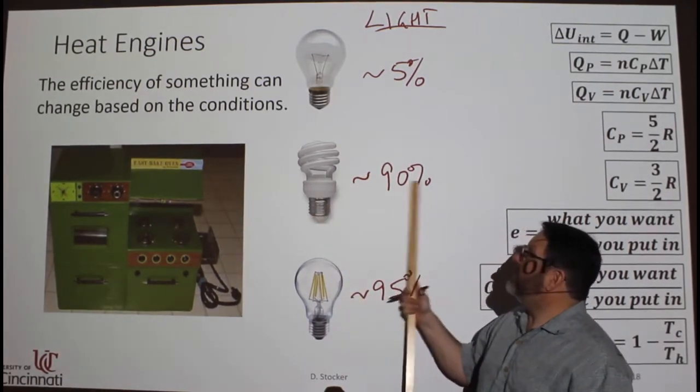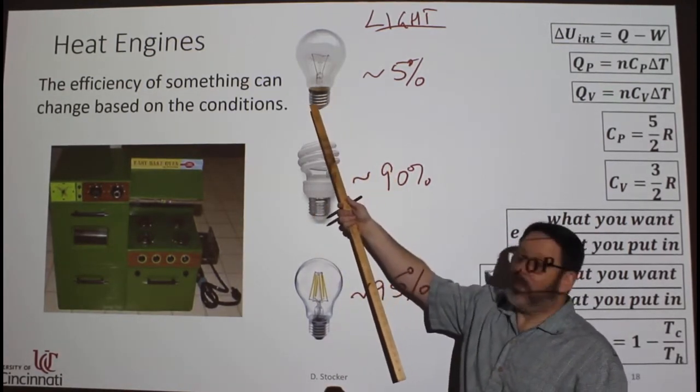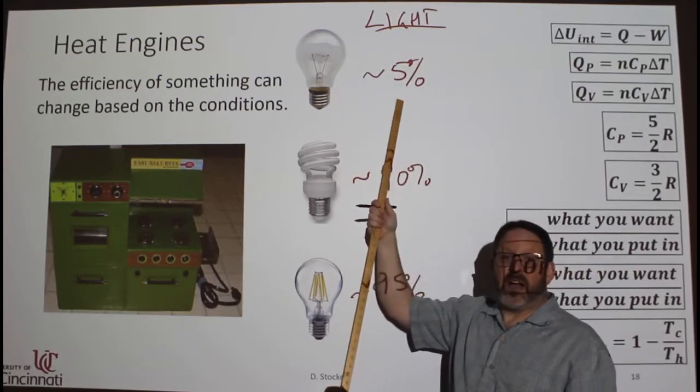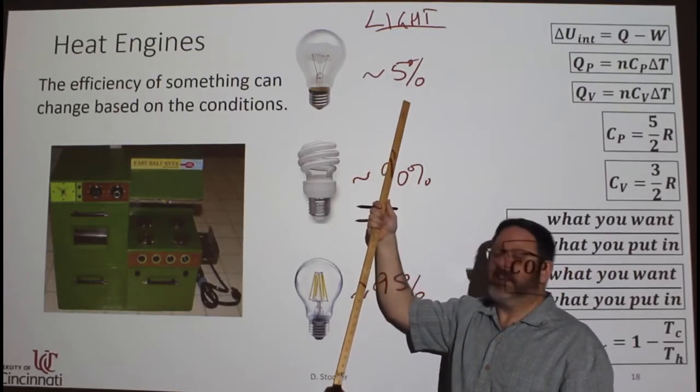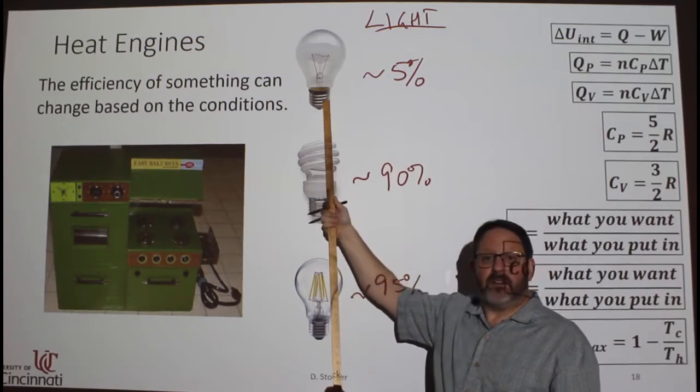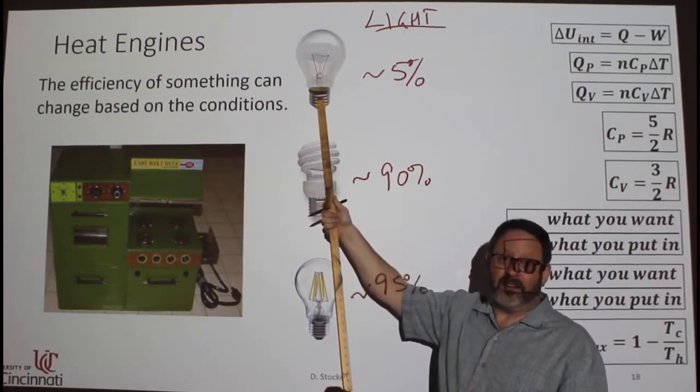This one's a little bit worse, 90%. This one's really bad, it actually produces a lot more heat than it produces light. So this is basically a space heater that also happens to produce a little bit of light.